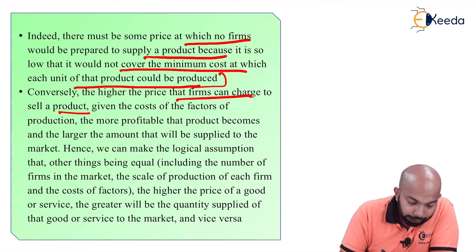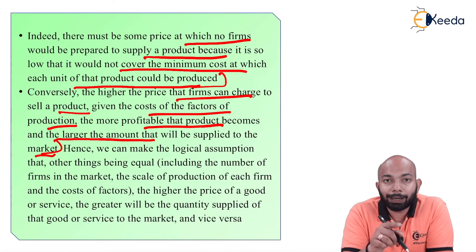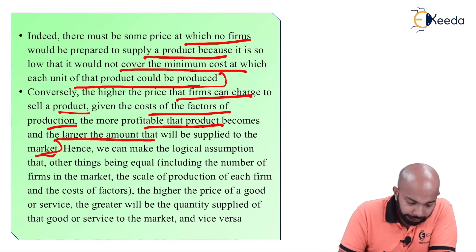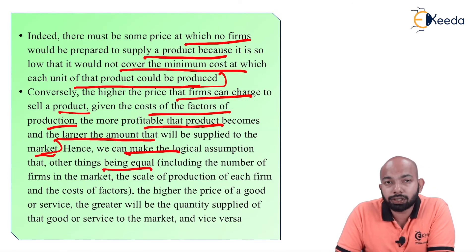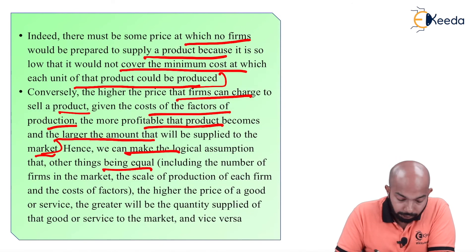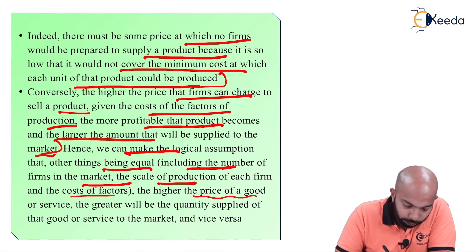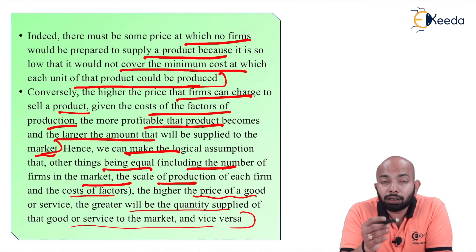Conversely, the higher the price a firm can charge to sell a product — given the cost of factors of production — the more profitable the product becomes, and the larger the amount that will be supplied in the market. If the price keeps on increasing, of course the supply will be more, and that will maximize profit. Hence, we make the logical assumption that other things being equal — that is, everything remains constant apart from the price — the higher the price of a good or service, the greater will be the quantity supplied in the market.